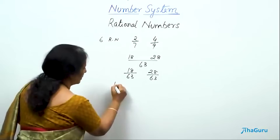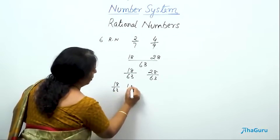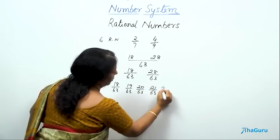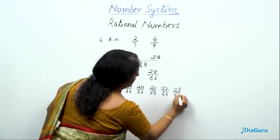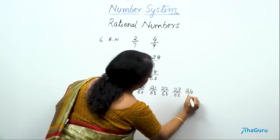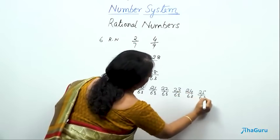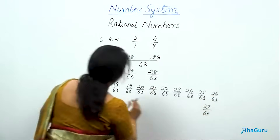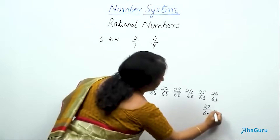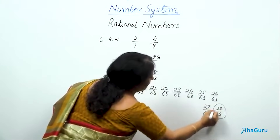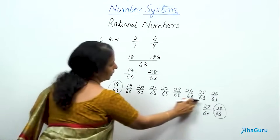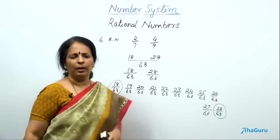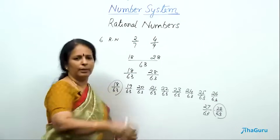Your choice — you can list 19/63, 20/63, 21/63, 22/63, 23/63, 24/63, 25/63, 26/63, and 27/63. Since 28/63 is already the upper bound, you simply choose any 6 of these fractions and list them as your answer.